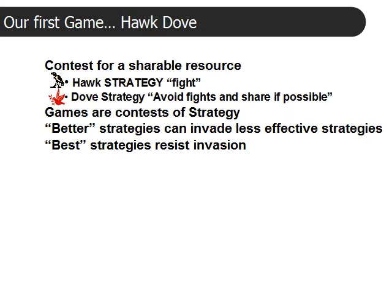The first game that we studied was the game of Hawk-Dove, which is a contest for a shareable resource. The Hawk strategy is the strategy of a fighter, and the Dove strategy is to avoid fights completely but share if they possibly can — Doves will share when two Doves meet. In general, games are contests of strategy. Strategy is in the genes of the players, and it's really strategy that is the driver of evolution.